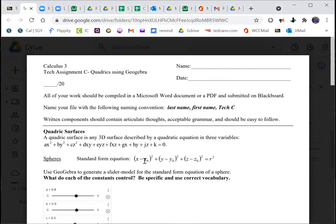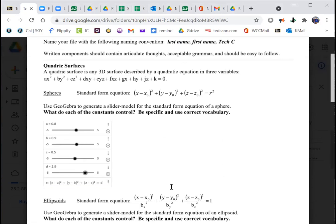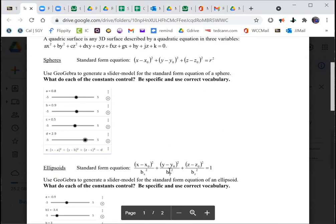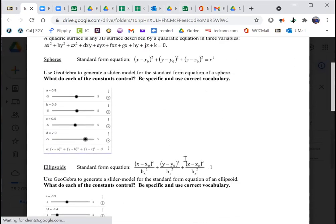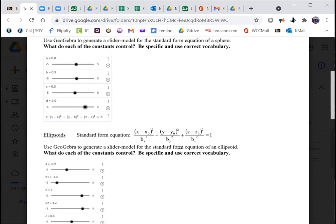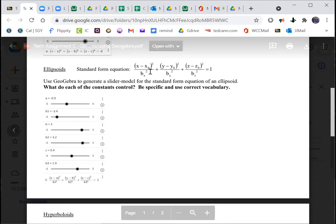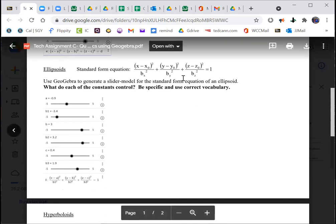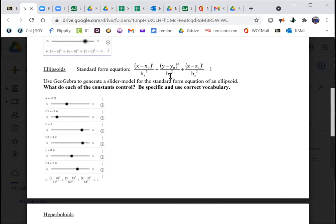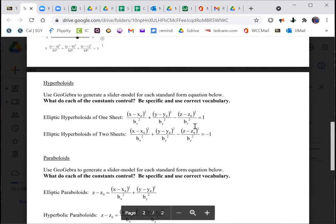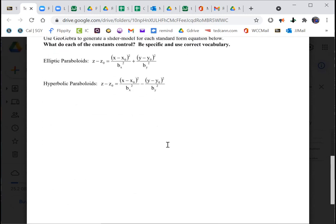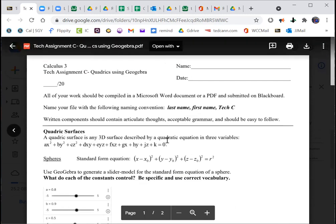What you're going to do is create in GeoGebra with sliders to represent each of these equations, and then manipulate the sliders to tell me what each of these control values do: the x sub o, y sub o, z sub o in the case of the ellipsoid, b sub x, b sub y, and b sub z, same idea with hyperboloids and paraboloids.